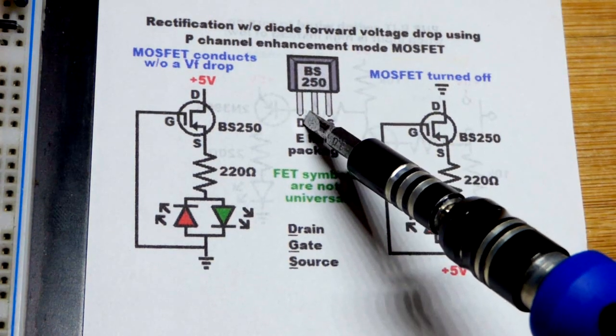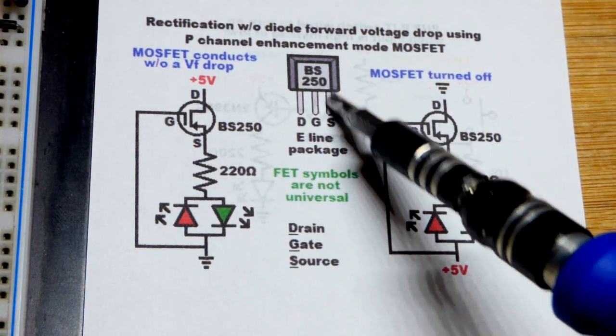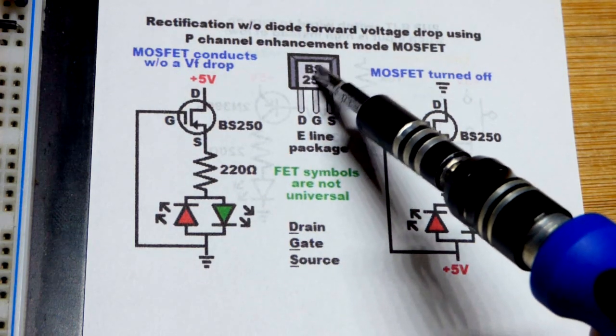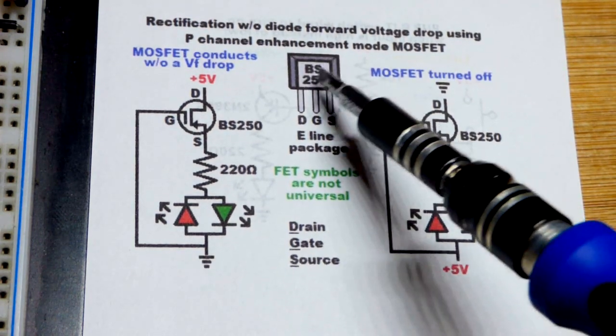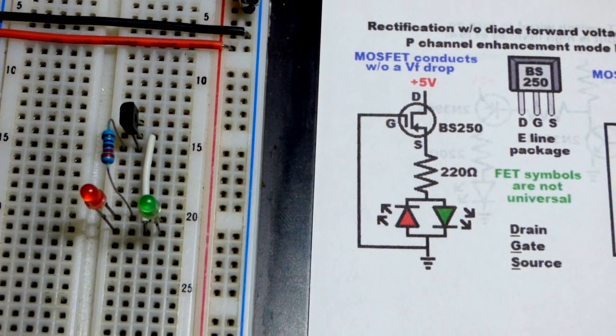We're using the BS250. Left pin is the drain, middle pin is the gate, and right pin is the source. The smaller flat side is the front. That's where it has its part number. In any case, we will zoom over here.